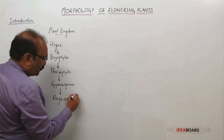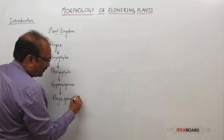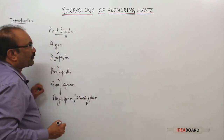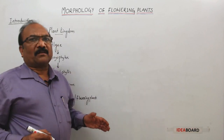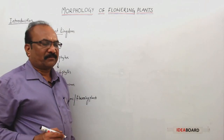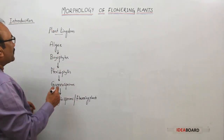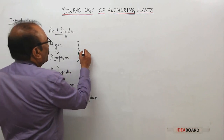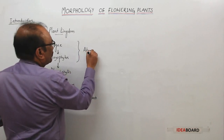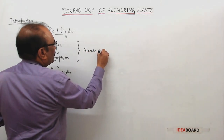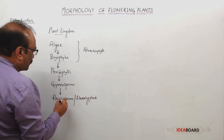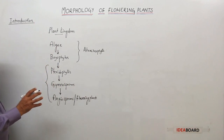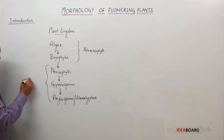Angiosperms have produced flowers, and that is why they are called flowering plants. Morphology of flowering plants can also be called morphology of angiosperms. Algae and bryophytes do not have any vascular tissues, and that is why they are called atracheophytes. But pteridophytes, gymnosperms, and angiosperms all have vascular tissues — xylem and phloem — and that is why these three are called tracheophytes.